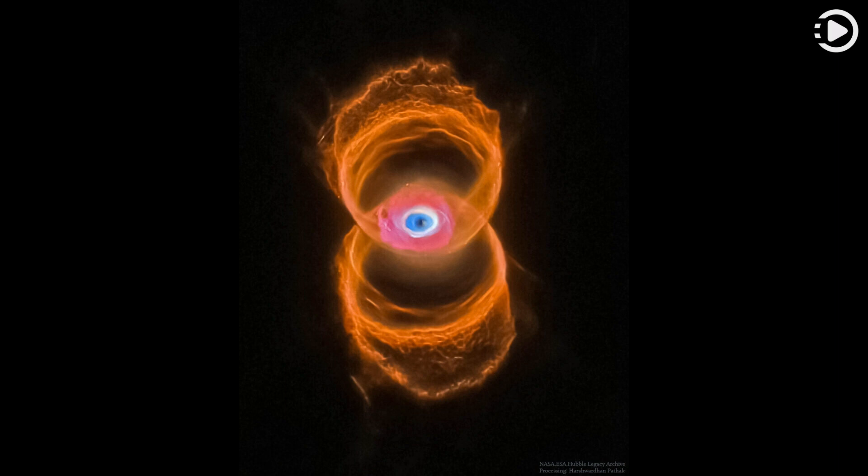If you can picture it, the rings of MyCN18 trace the outline of an hourglass, although one with an unusual eye in its center.